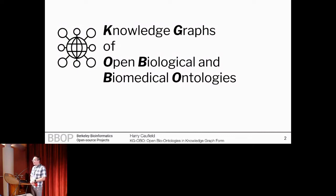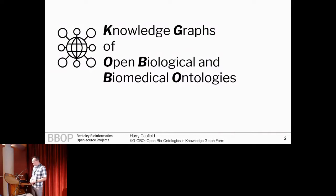I assume, considering this is the ontology section, that everybody's familiar with the concept of an ontology, so I'm not gonna be too worried about that. The concept of a knowledge graph is a little bit fuzzier. People tend to use it a little bit differently. And we actually didn't talk about OBO ontologies quite as much as we expected, so I may have to briefly mention that.